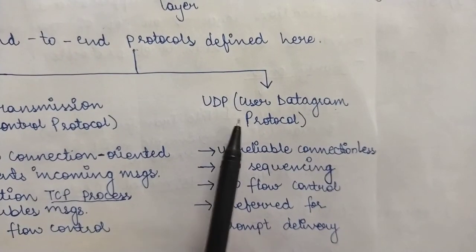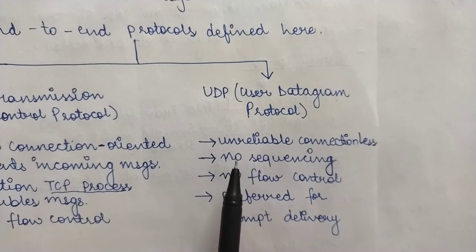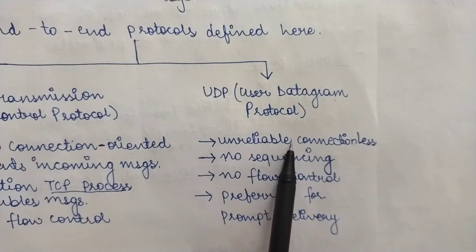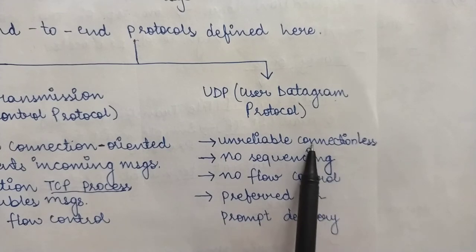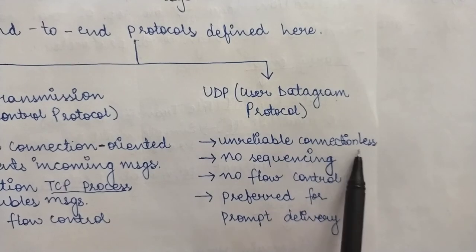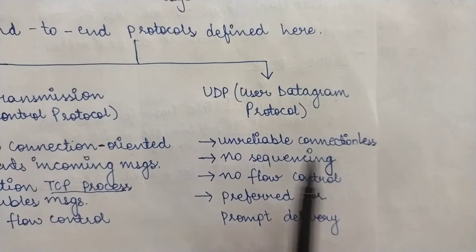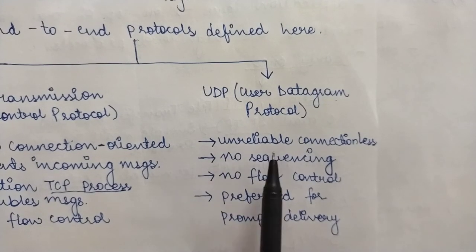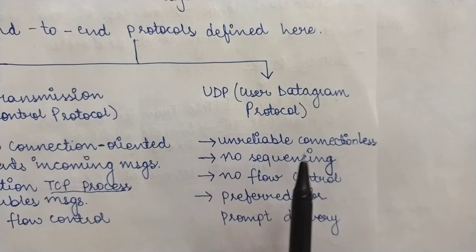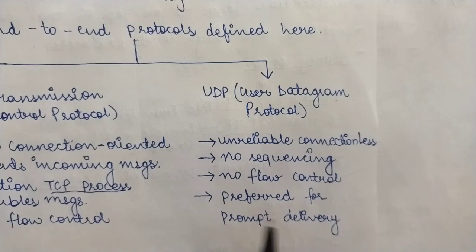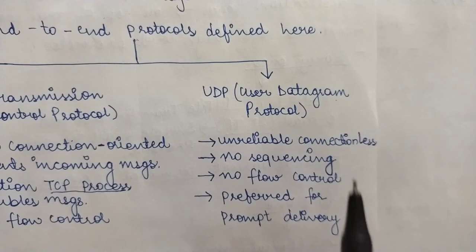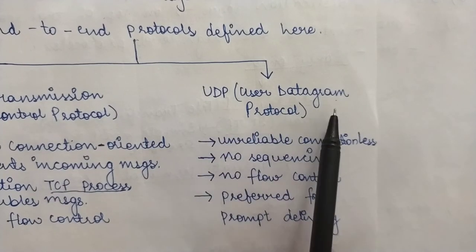The User Datagram Protocol (UDP) is used in situations where reliability is not that important, so you choose an unreliable connectionless service. Connectionless means there is no dedicated connection between source and destination, so different packets from the same source to the same destination can choose different independent paths. Unreliable means there is no requirement for acknowledgements. Applications that do not want TCP's sequencing or flow control can use UDP.